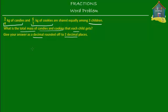So here what we have to do is deal with fractions and decimals. First things first, let's see what we've got. So what we've got is three-fourths of a kilogram of candies and six-sevenths of a kilogram of cookies. So let's make models for that.